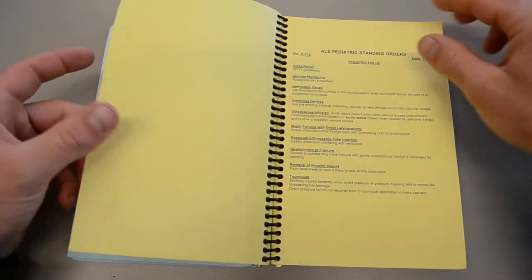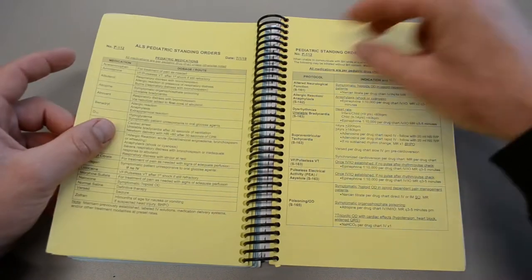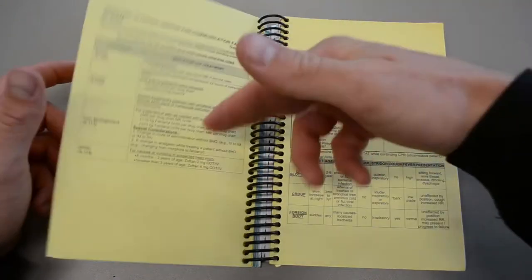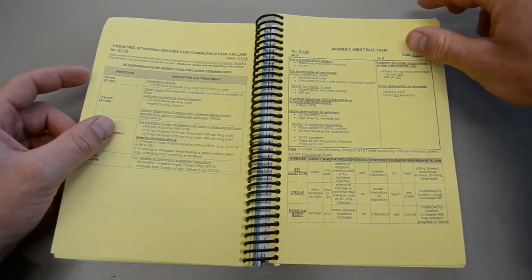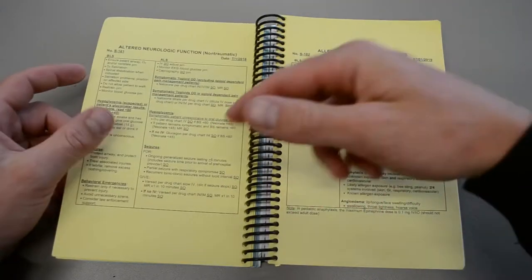So these are the pediatric standing orders. They look much like the blue pages. Again you have your BLS section on the left, your ALS section on the right. We need to know the BLS stuff.